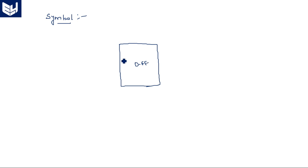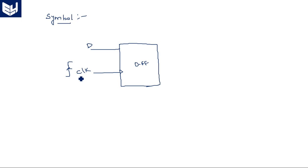This is the D flip-flop with a D input and a clock signal. Let us assume the clock is a rising edge clock. For any flip-flop, there must be a clock input. The clock may operate in two ways: rising edge or falling edge. If it is a rising edge clock, the flip-flop changes its output only on the rising edge. If it is a falling edge clock, it responds only when the falling edge occurs.